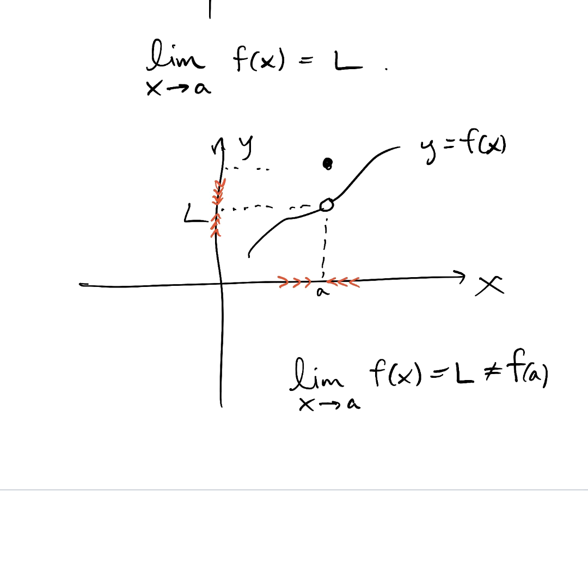Still true, but what's no longer true is that L agrees with the value of the function right at a. The value of the function right at a is different from the limit. So this function is not continuous. So back in the day, we used limits to decide if functions are continuous or not. Continuity just meant value right at the point agrees with limit as you approach the point.